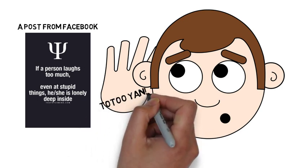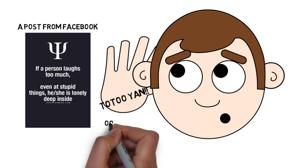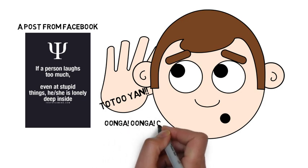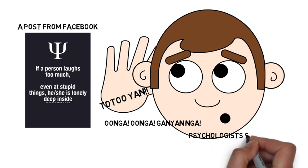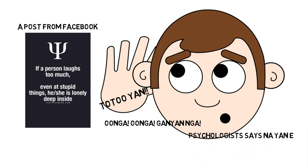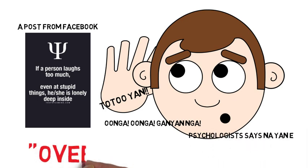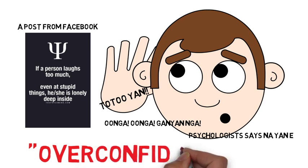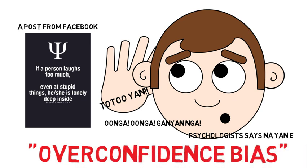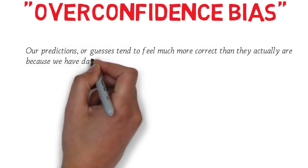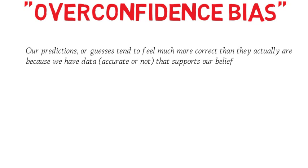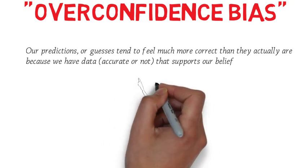Tapos na-confirm mo pa na gawa nakaka-relate ka. Ikaw naman tong CEO, oo nga, totoo yan. Psychologist says, tapos hashtag relate pa ako. E di totoo nga yan. What's happening here is what we call overconfidence bias. Our predictions, our guesses, tend to feel much more correct than they actually are. Because we have the data, or it may be accurate or not, pero it supports our belief. Kaya feeling natin, totoo yung pinaniwalaan natin.